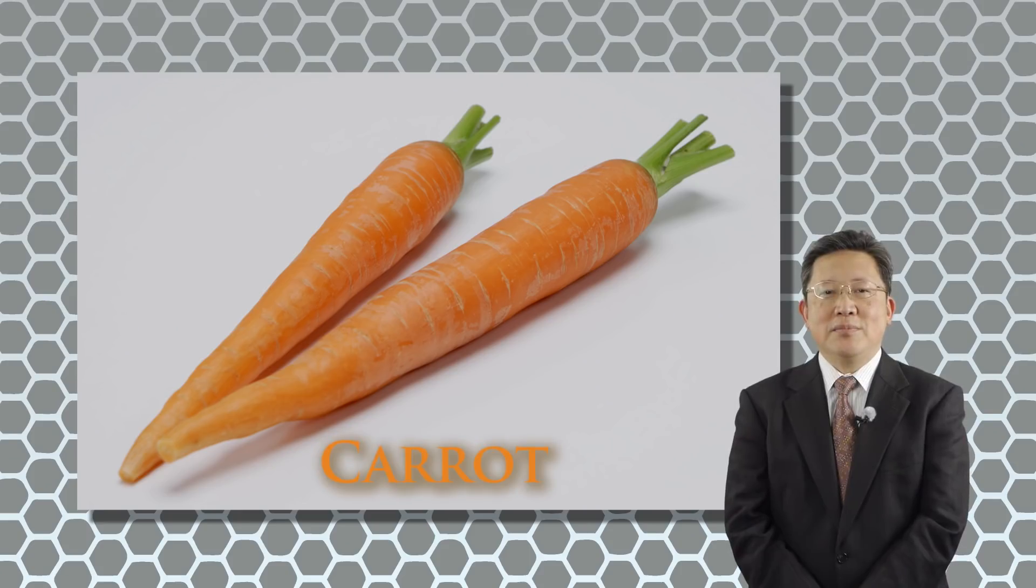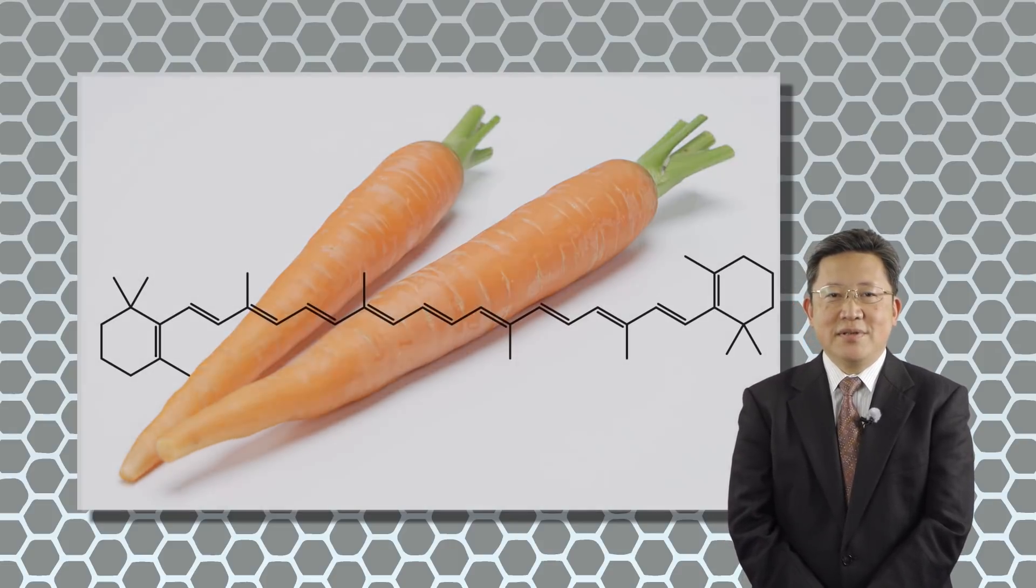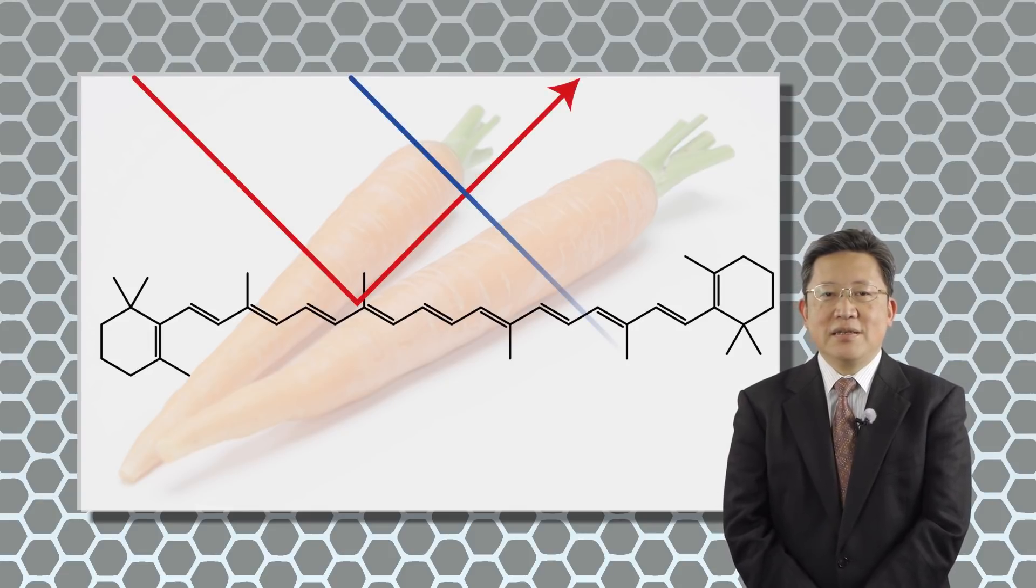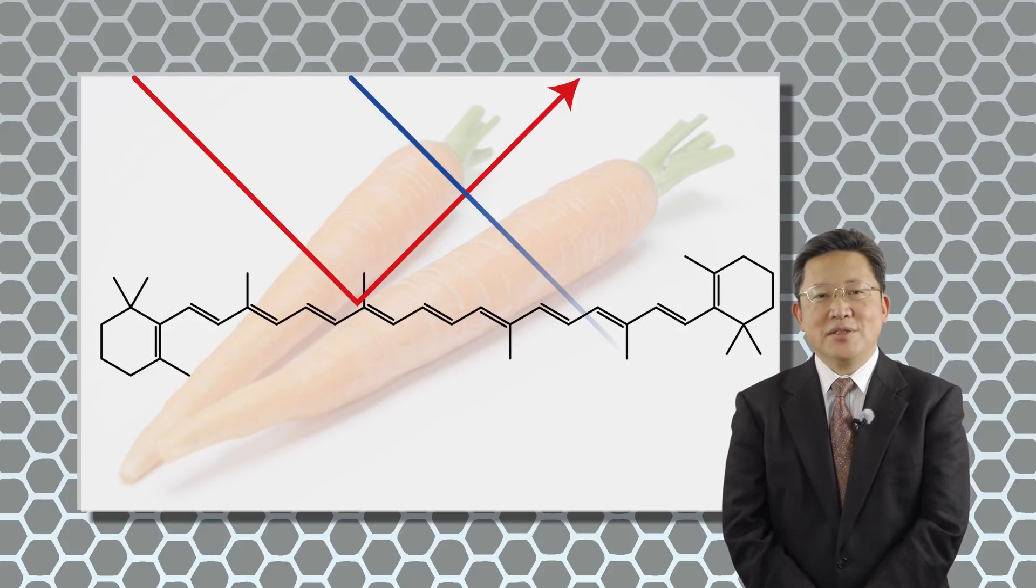For example, you know that carrot is orange. To understand why carrot is orange, we need knowledge of quantum mechanics.